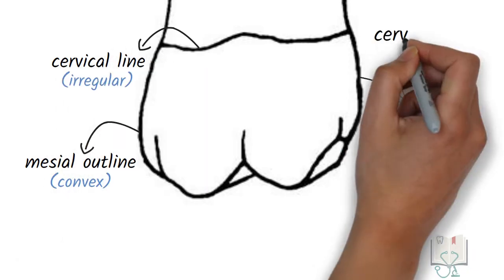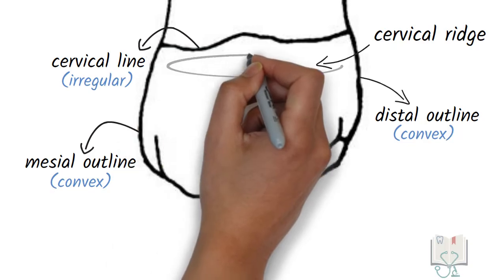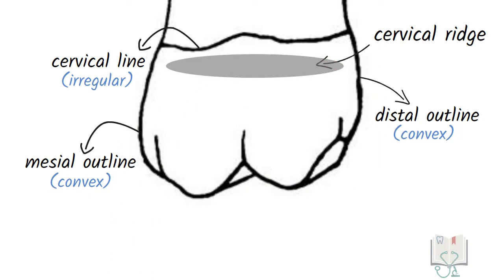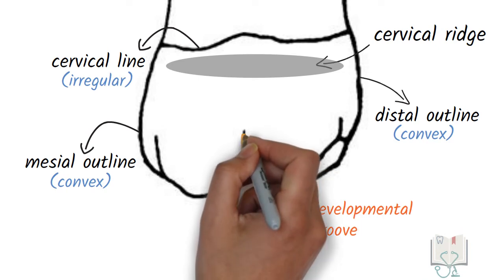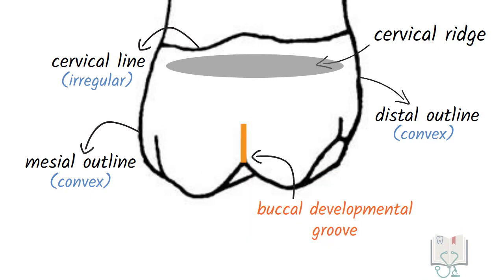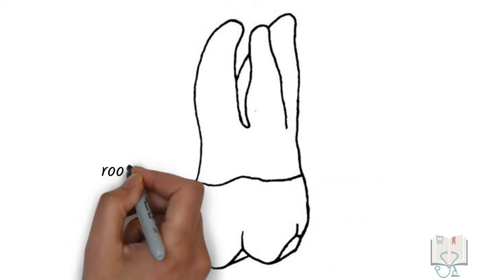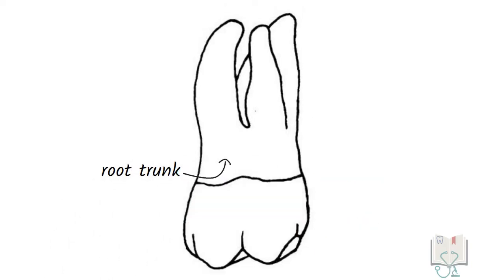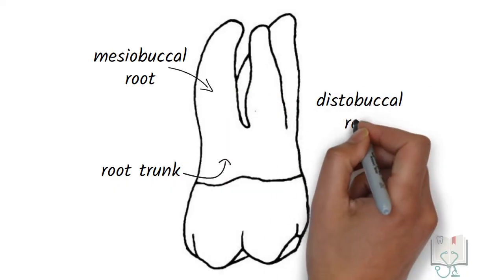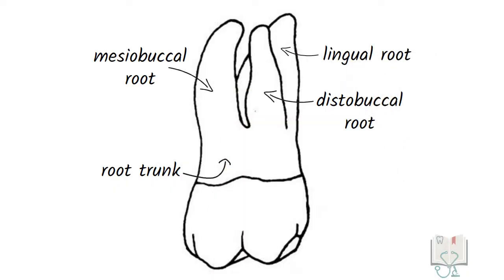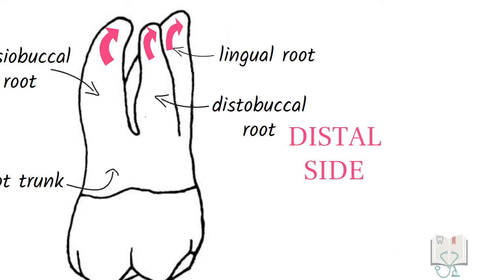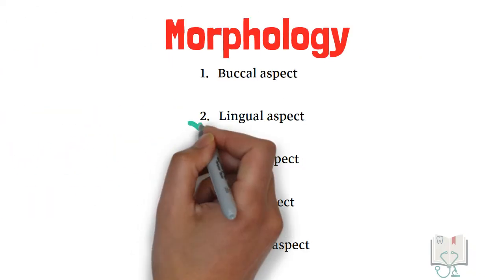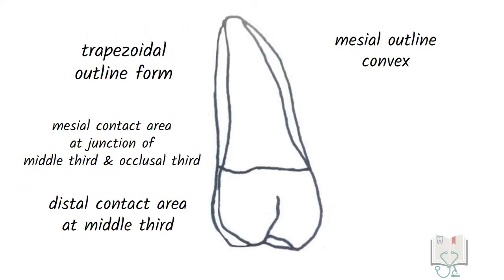A faint cervical bridge is seen running mesiodistally in the cervical third. A buccal developmental groove is seen running cervically between the two buccal cusps. From this aspect, all three roots are visible. The root trunk is seen bifurcating into the mesiobuccal root and distobuccal root, whereas the lingual root is seen partially in the background. All roots have a slight distal tilt.